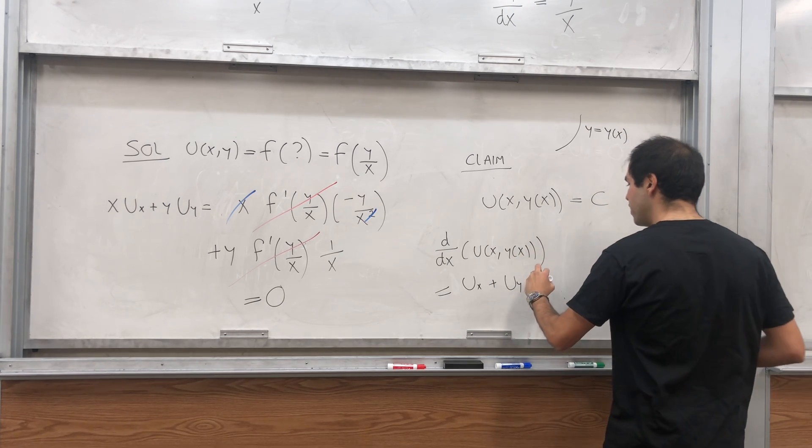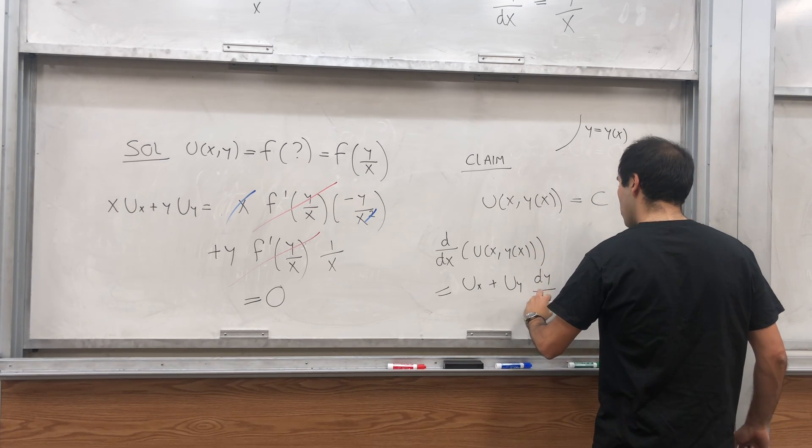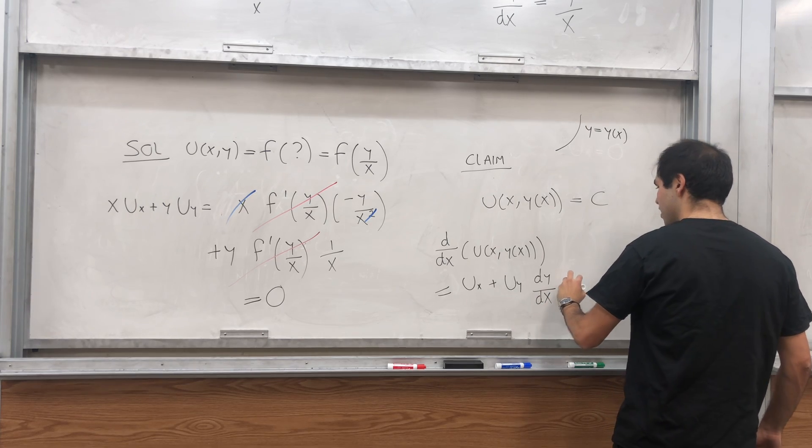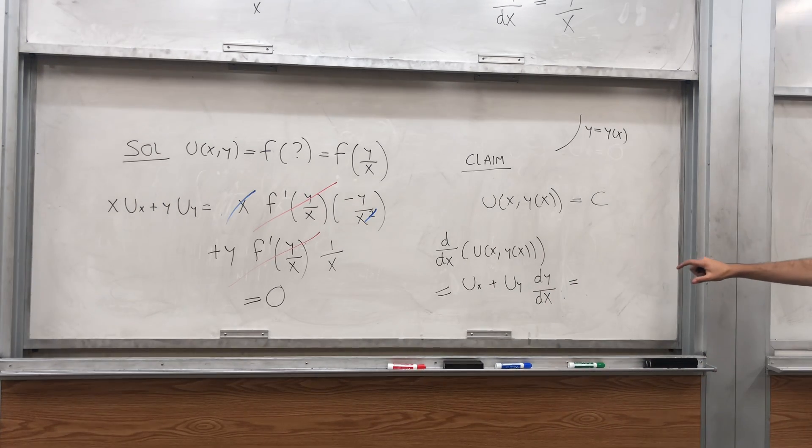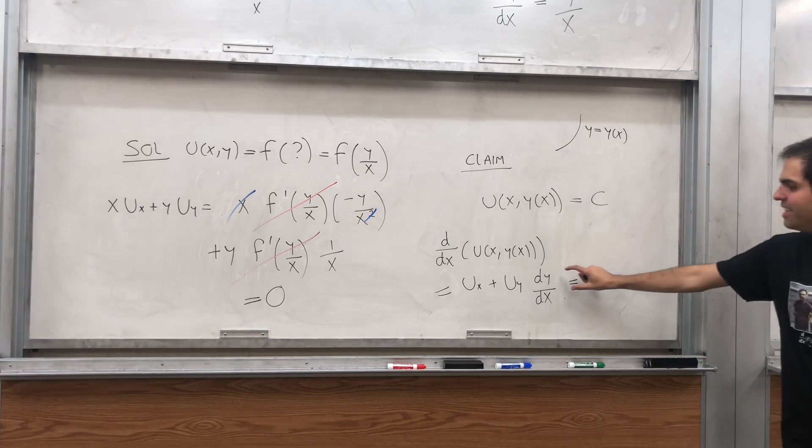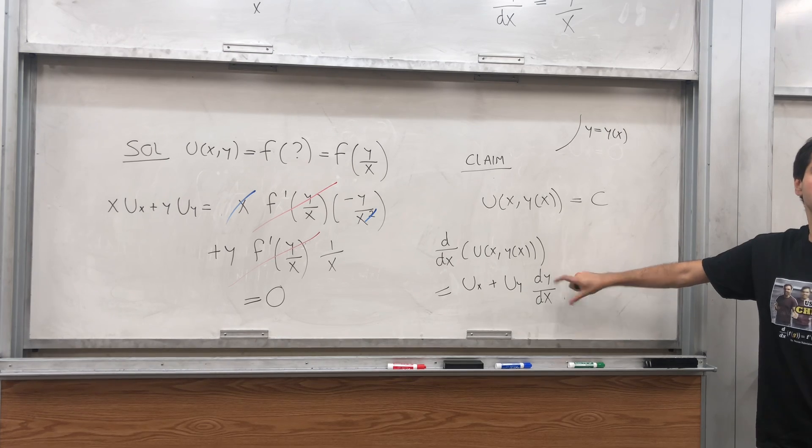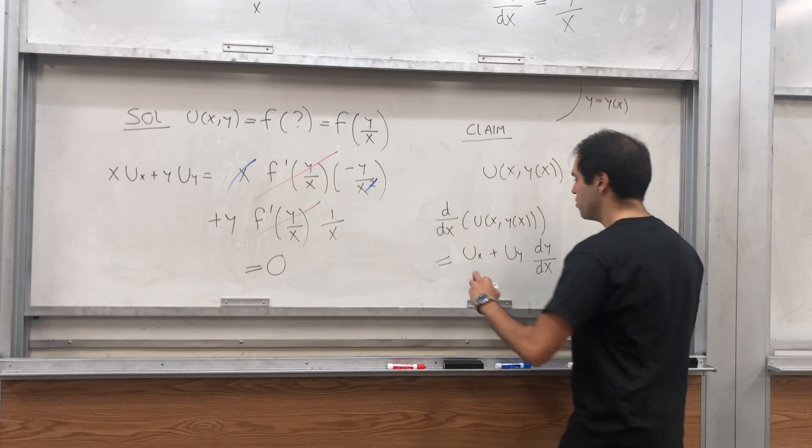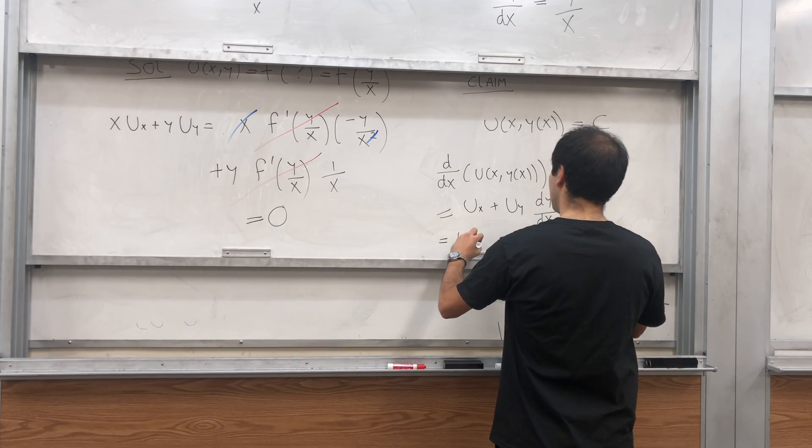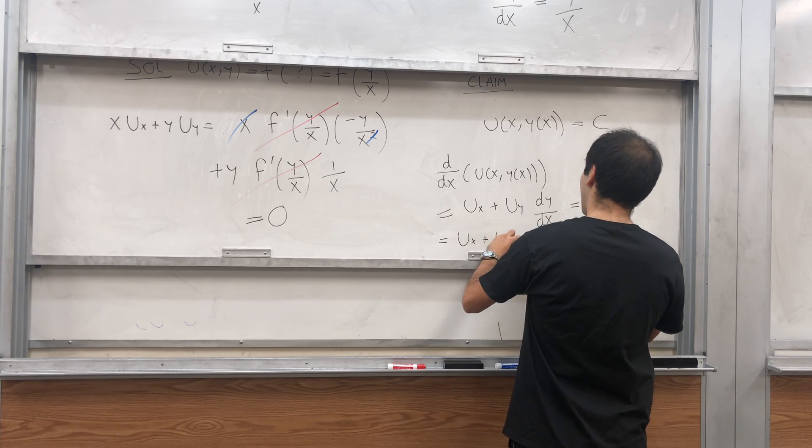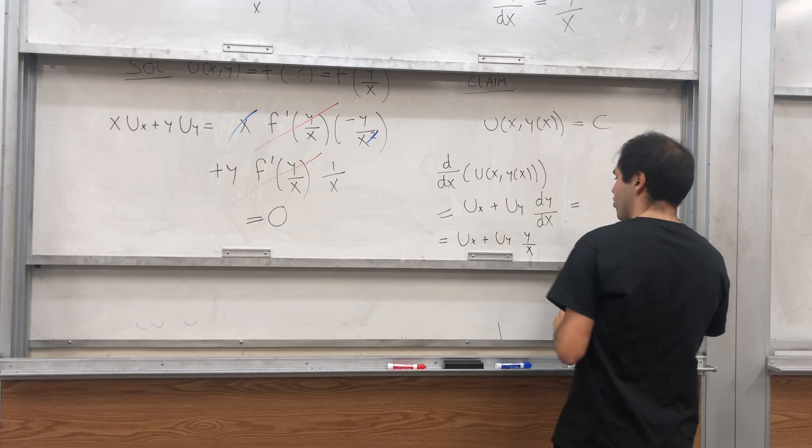But remember, we assumed dy over dx to be the slope of v. So this is just the same thing as saying u_x plus u_y times y over x.